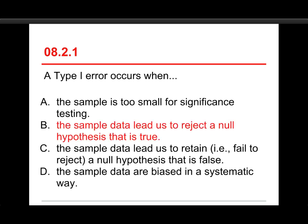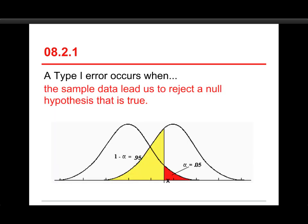Well, a type 1 error occurs when the sample data lead us to reject a null hypothesis that is true. Now, this is the long and correct explanation. However, it is easier to remember it's a false positive. And so, the idea here is that the null hypothesis is true. In fact, let's take a look here.